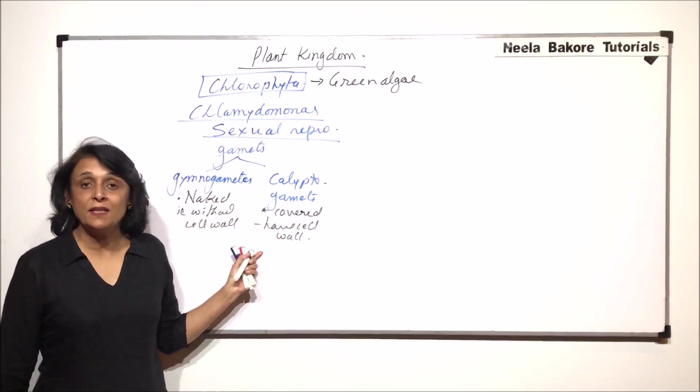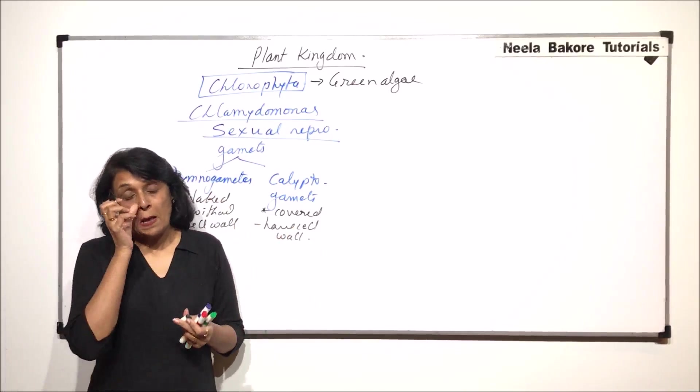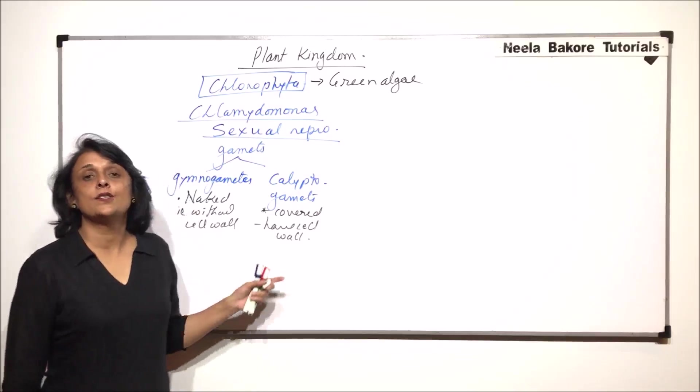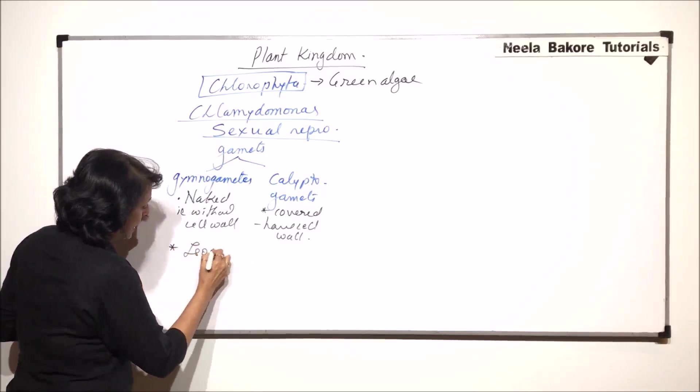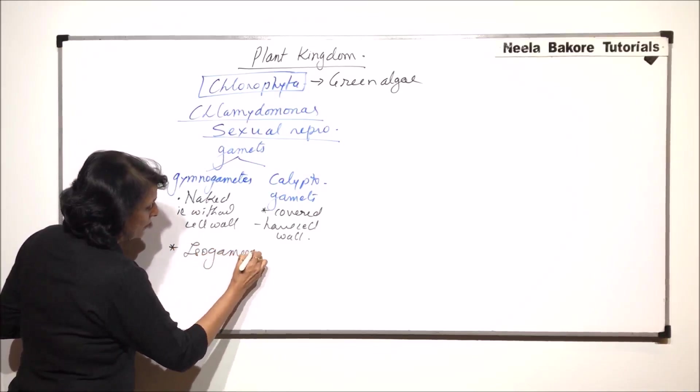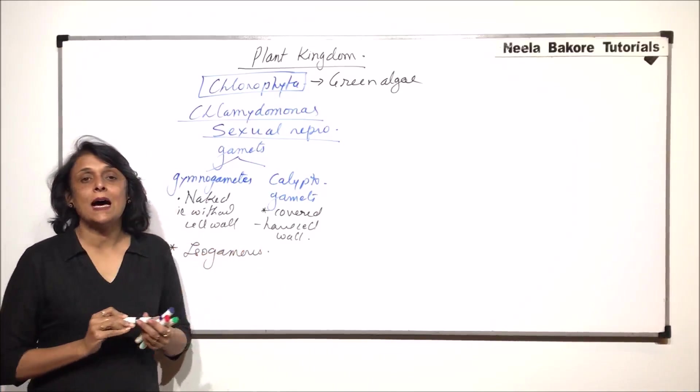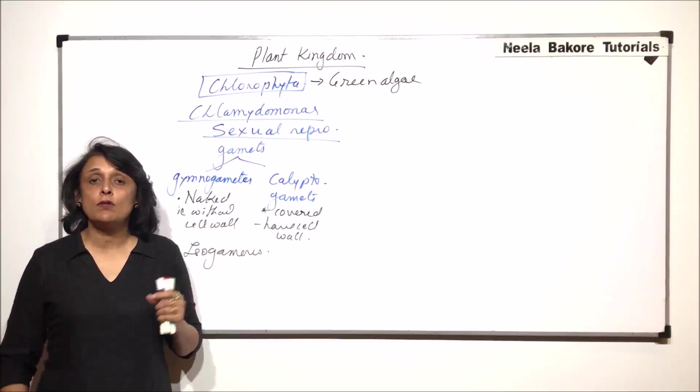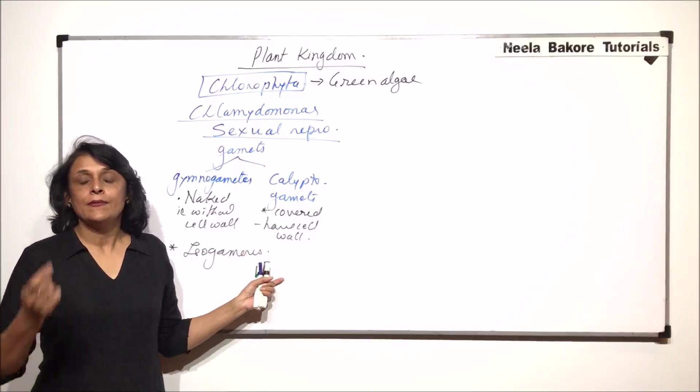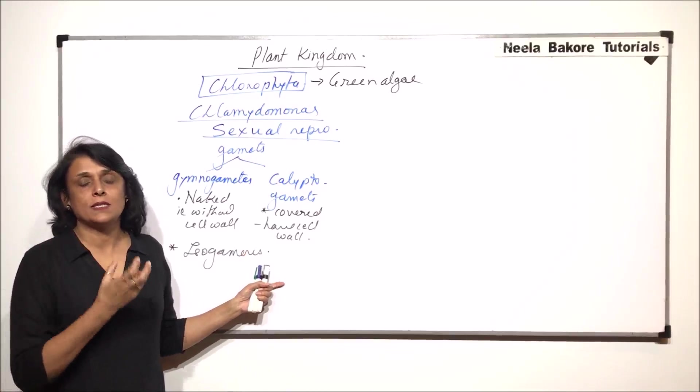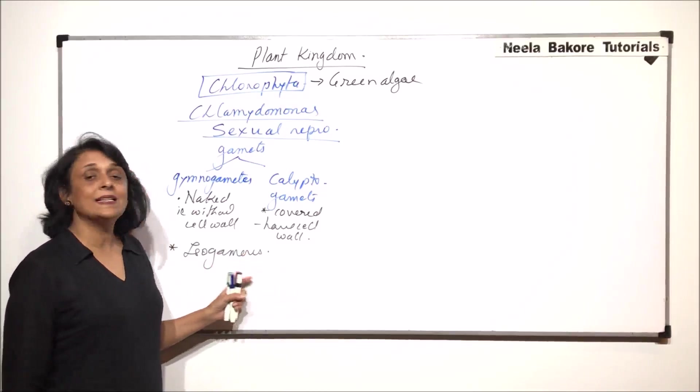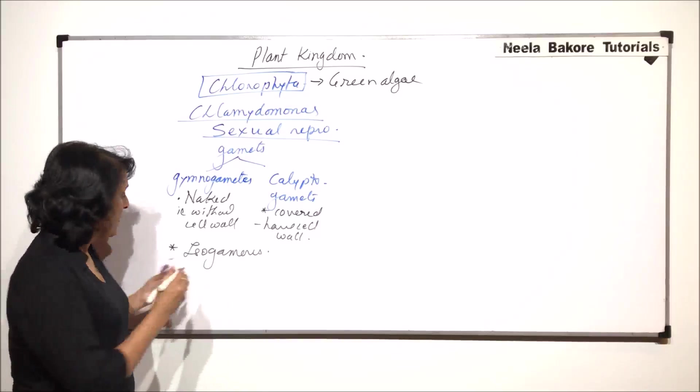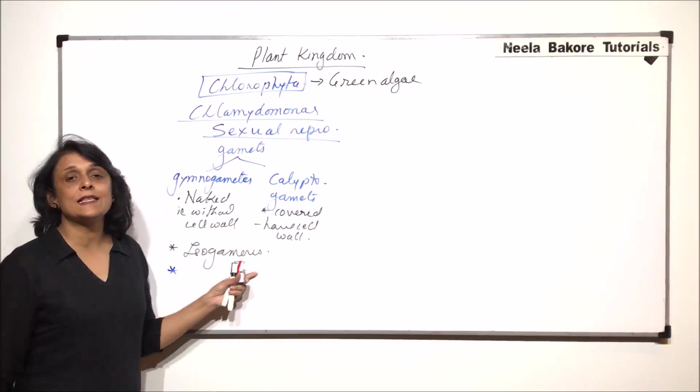There are two possible types of gametes which can be produced. The fertilization is termed as isogamous type. Isogamous means the two fusing gametes are morphologically and physiologically identical. That means size-wise, structure-wise, in every respect they are exactly the same and these gametes are going to fuse.